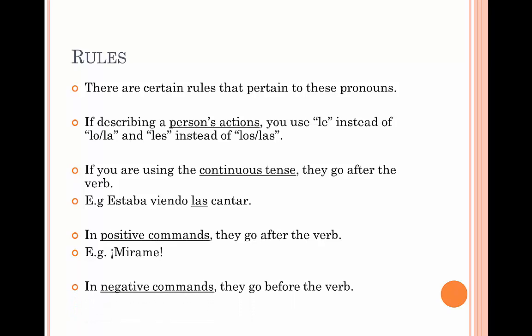In negative commands, however, they go before the verb. No le mires is an example. In this case, we have a negative using the word no in the sentence. So we then have to put le, which is the direct object pronoun we use when describing a person's actions, in front of the verb. The verb is mires, conjugated from mirar, meaning 'to look.'